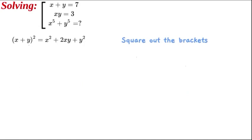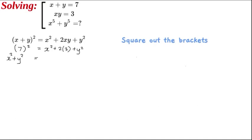Let's get started. First of all, let's square out x plus y. We get x plus y squared is equal to x squared plus 2xy plus y squared. We replace xy with 3 and x plus y with 7, so 7 squared equals x squared plus 2 times 3 plus y squared. Therefore x squared plus y squared equals 49 minus 6, which gives us a result of 43. We'll take that as equation 1.